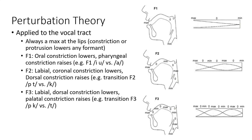For F3, things get more complicated because the standing wave has more maxima and minima, so finding particular articulatory locations can be a challenge. Constriction in the labial or dorsal region is near maximum points, whereas a constriction in the alveolar or palatal region is near a minimum point. So formant transitions for the third formant would go from lower for the consonant to higher for the vowel for labial and velar consonants, but from higher for the consonant to lower for the vowel for alveolars.